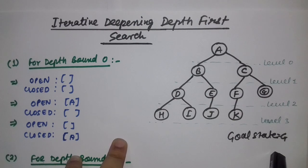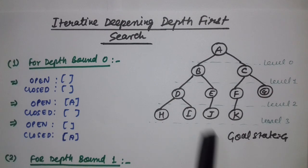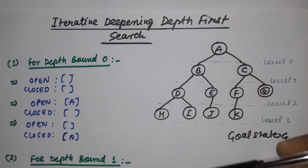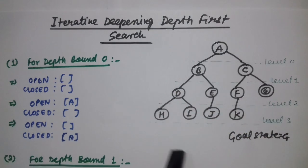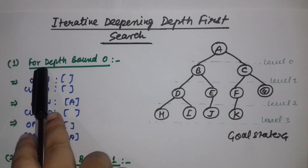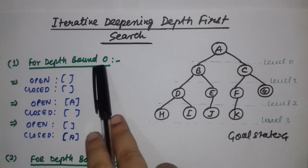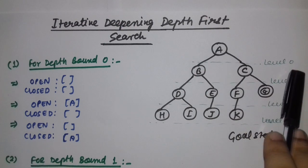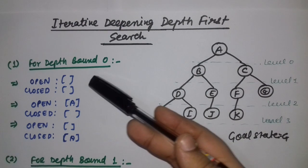The meaning of iterations is repetition — we have to repeat the whole procedure as we proceed. In iterative deepening depth first search we go into the depth of the tree iteratively. First of all we will go for depth bound 0, meaning we have to see the label 0 elements. Now I am going to start the traversal.